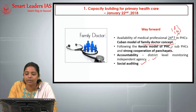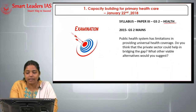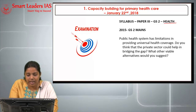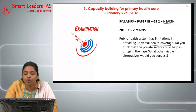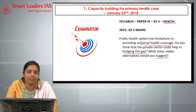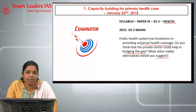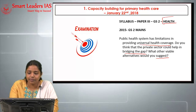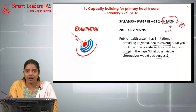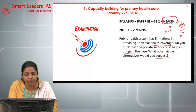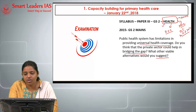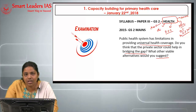Health is a topic in GS2. A similar question on public health care delivery was asked in 2015: 'The public health system has limitations in providing universal health coverage — do you think the private sector could help in bridging the gap, and what viable alternatives would you suggest?' We can expect similar questions on capacity building in primary health care centers in the 2018 exam. Broadly, health topics in GS2 cover the public health care delivery system, policies like National Health Policy 2017, role of the private sector, and disease eradication.